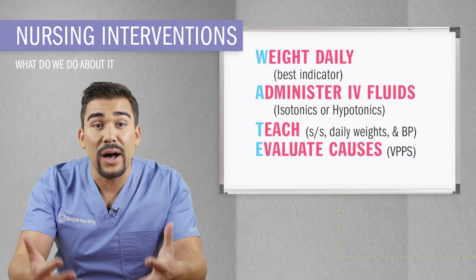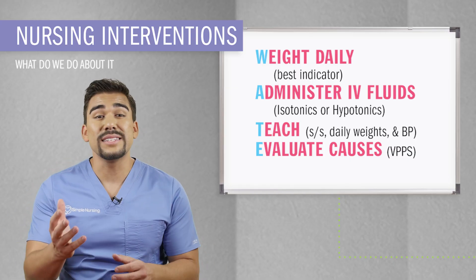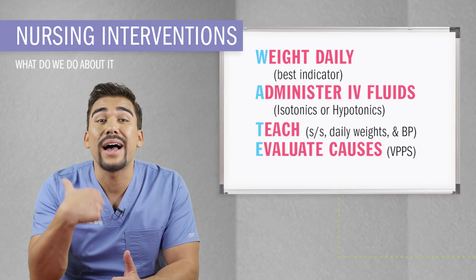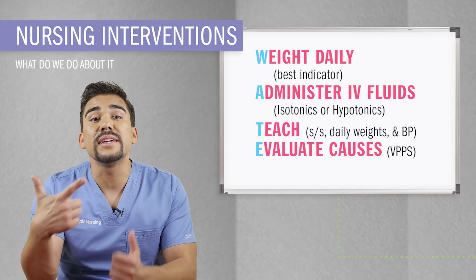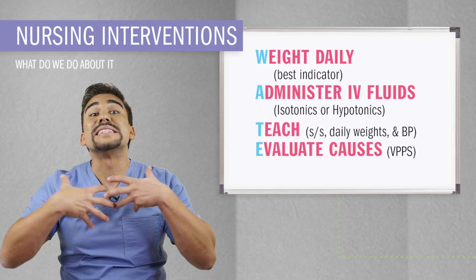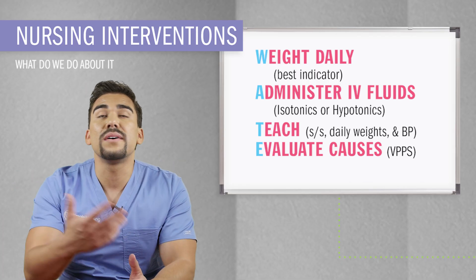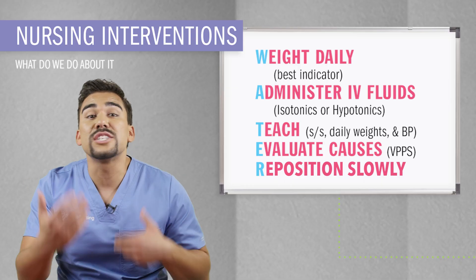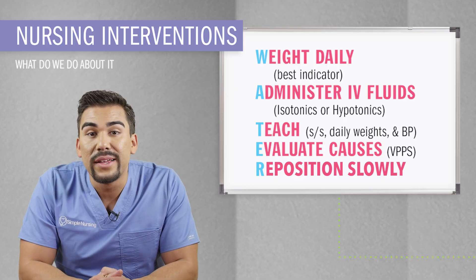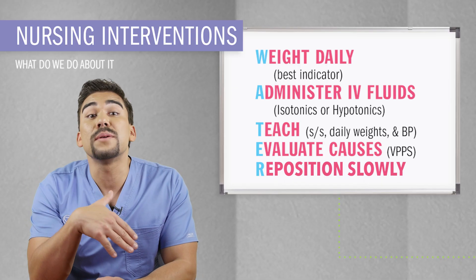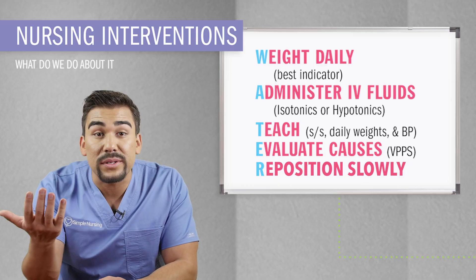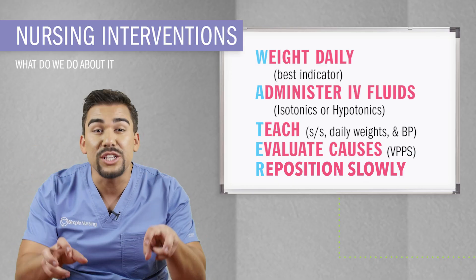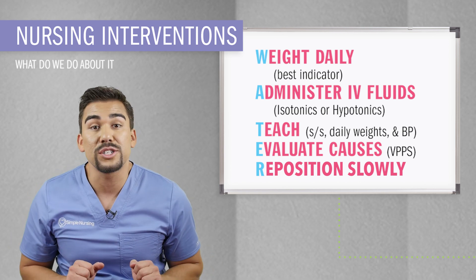When we start adding more fluids to the body, we need to monitor for signs and symptoms of fluid volume overload. The most common symptoms are high blood pressure, JVD (jugular vein distension), bounding pulses, and all the rest. R is for reposition slowly — encourage your client to change position slowly when standing up. The last thing you want is for them to stand up too quickly and pass out, which commonly happens with orthostatic hypotension, basically low blood pressure upon standing.